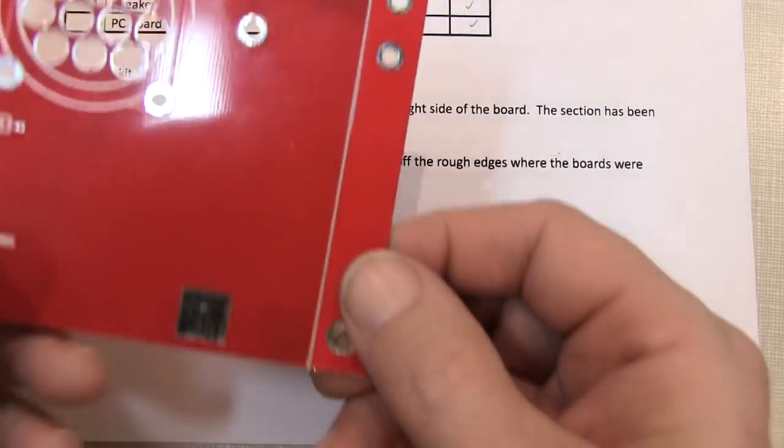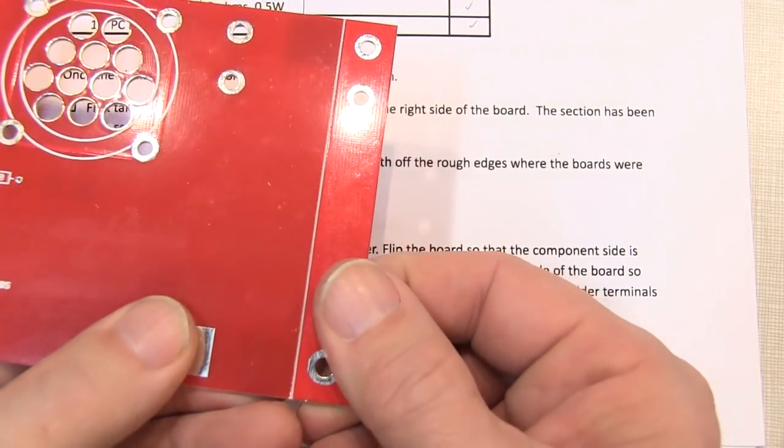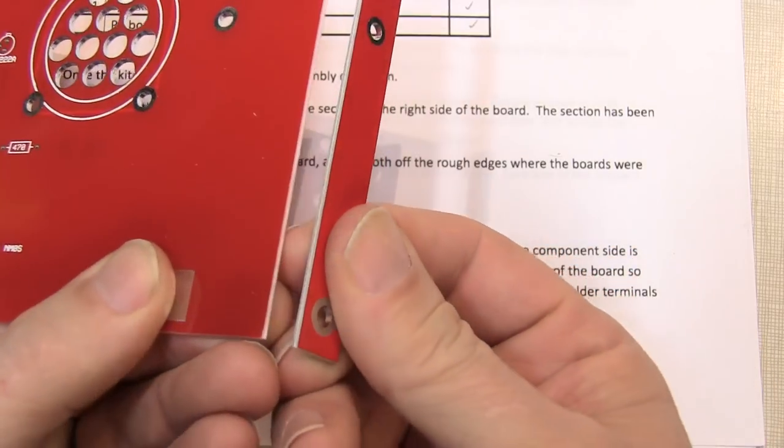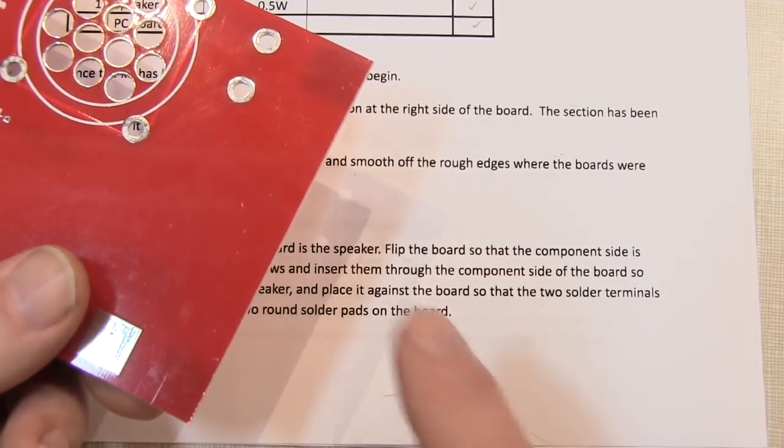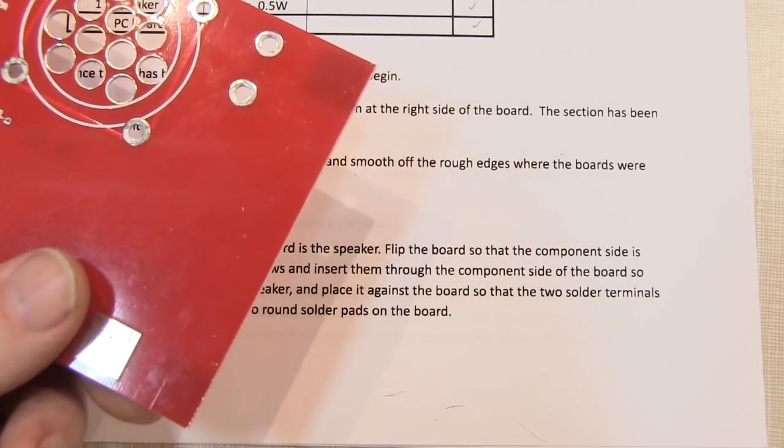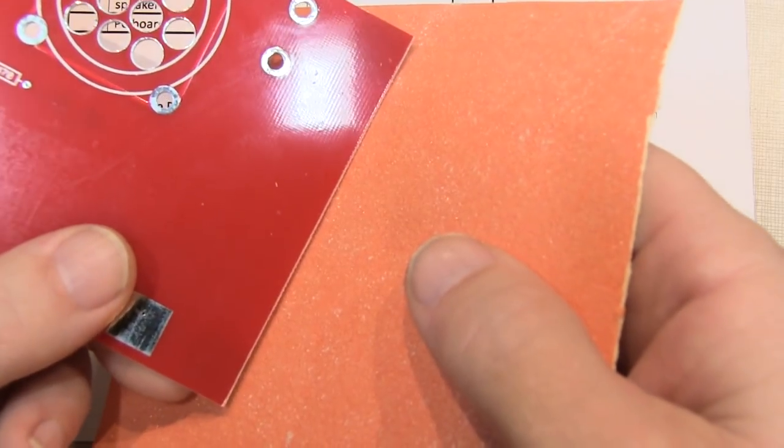The first step is to break off the piece of the circuit board that becomes the Morse code key and that's just grooved and makes it very easy to snap off. After you've separated the circuit board, some of these edges might be sharp so you can take your sandpaper and smooth those edges if necessary.